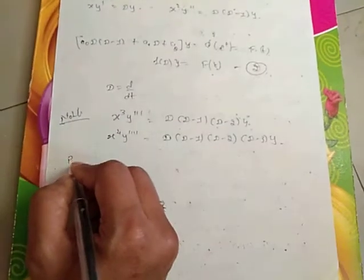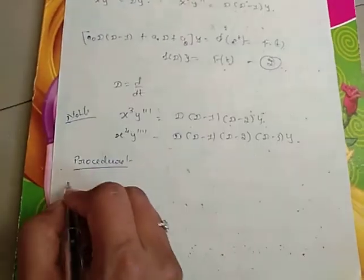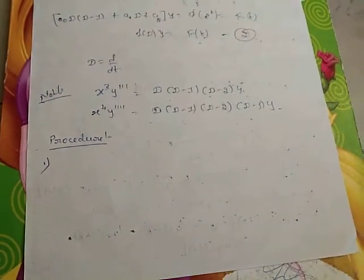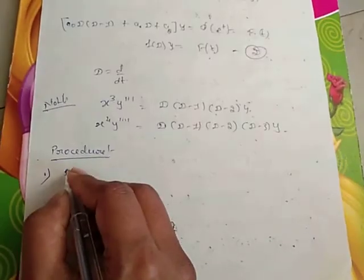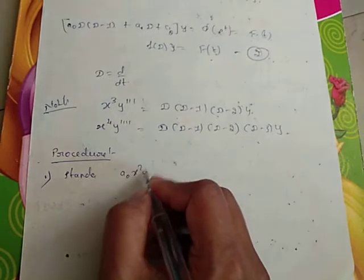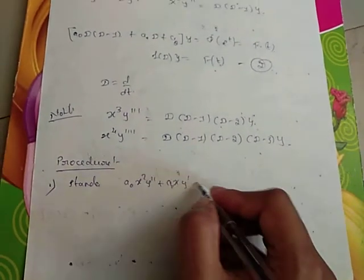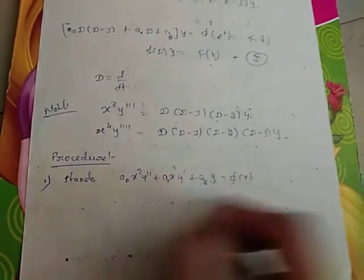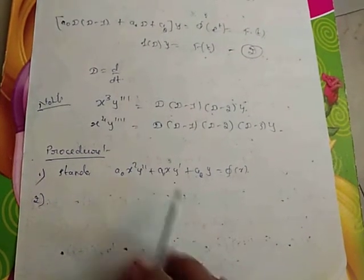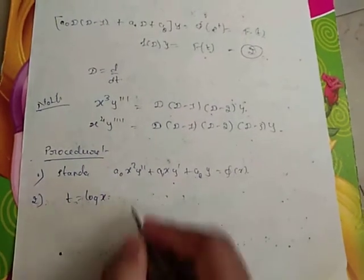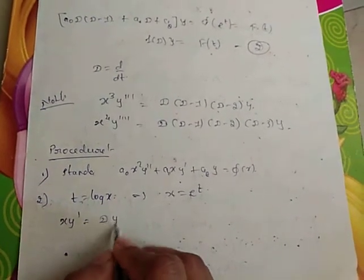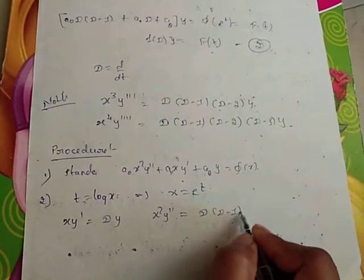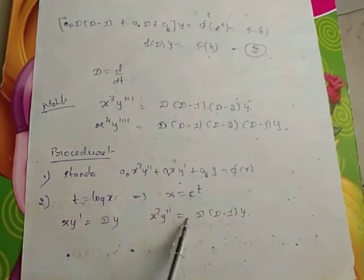Now we move to the procedure to solve Cauchy's equation. The given equation should be in the standard form: A₀X²Y'' + A₁XY' + A₂Y = φ(X). In some cases it is not directly in standard form, so we apply techniques to convert it. Then put T = log X, X = e^T, and assume: XY' = DY, X²Y'' = D(D−1)·Y. Here I am taking only the second order, so these two substitutions are used.